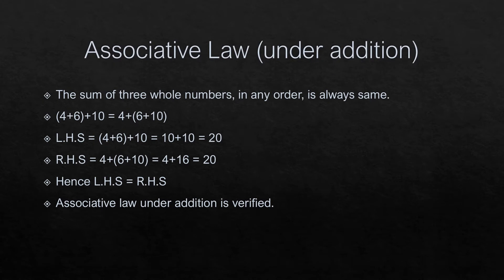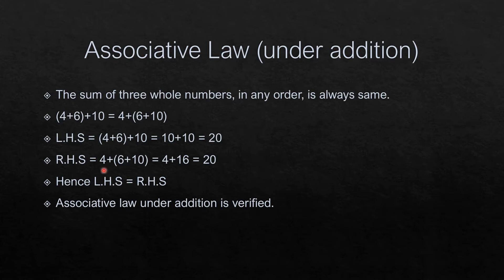Associative law under addition: in this law we are taking three whole numbers. The sum of three whole numbers in any order is always the same. Taking three whole numbers 4, 6 and 10, then (4 plus 6) plus 10 equals 4 plus (6 plus 10). Left hand side: (4 plus 6) plus 10 equals 10 plus 10 equals 20. Right hand side: 4 plus (6 plus 10) equals 4 plus 16 equals 20. Left hand side equals right hand side. Associative law under addition is verified.